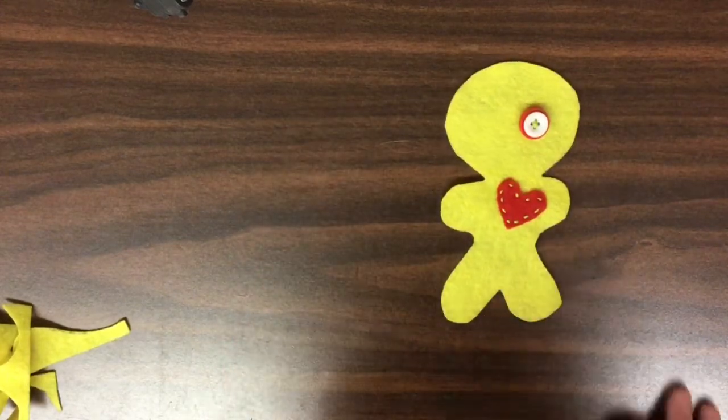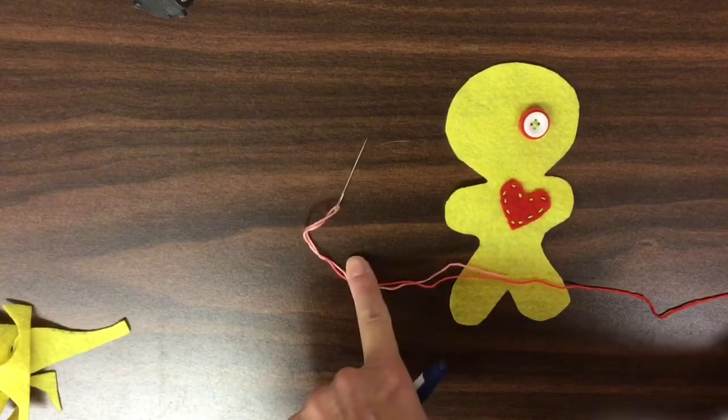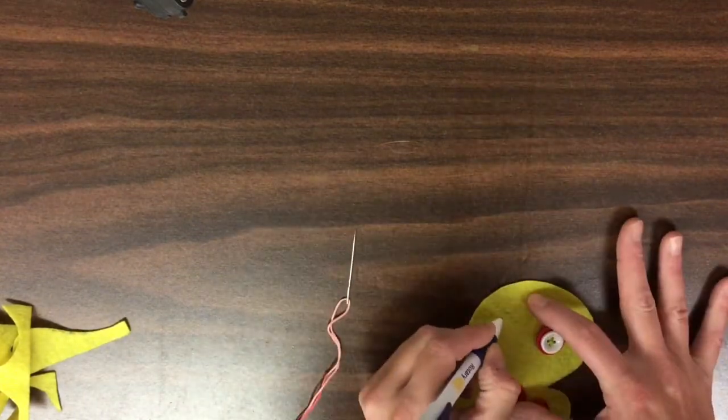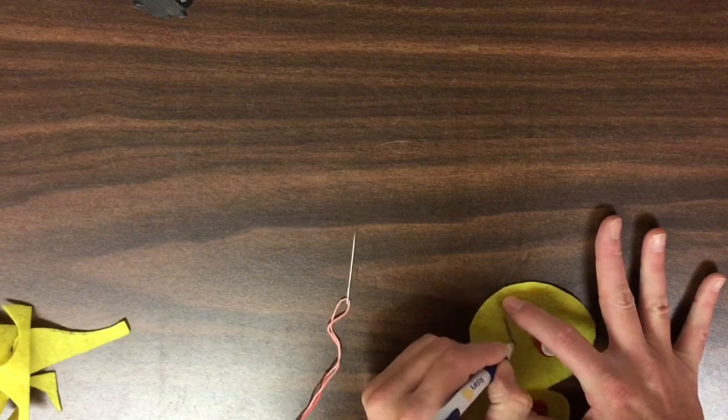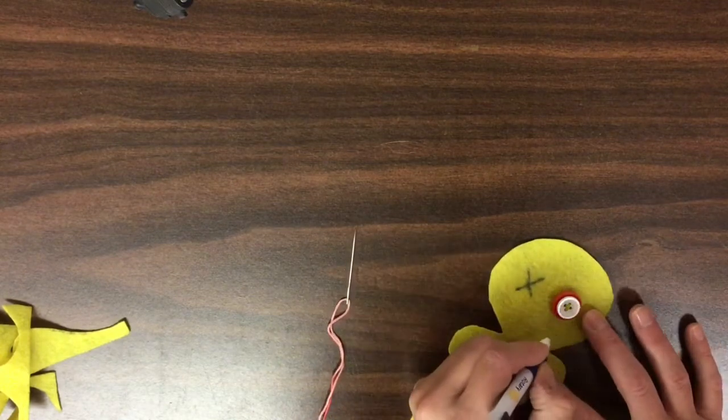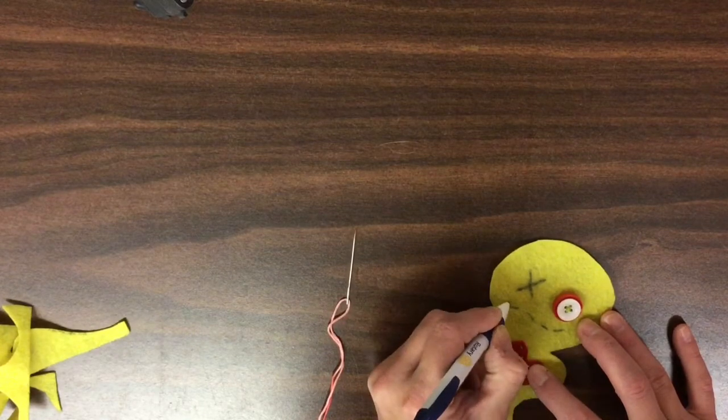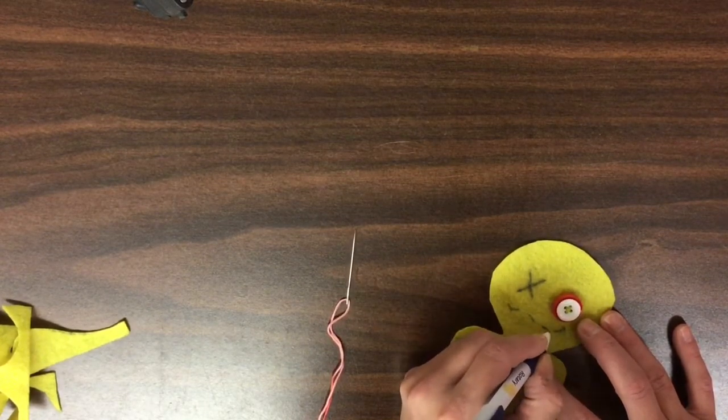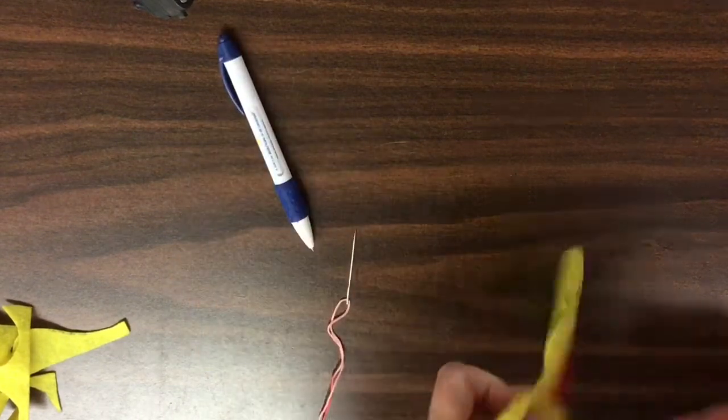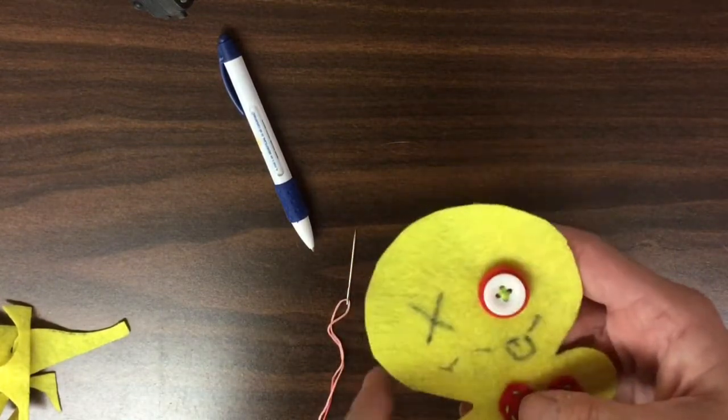To finish up our little face, you're going to need a pen or a pencil and you are just going to draw out what you want to stitch. So I have my needle prepped with a long end and a tail again, no knot, and you are just going to kind of draw out what you want to do.